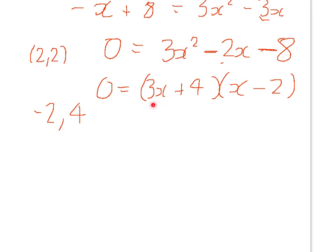What value makes this bracket equal to 0? Because when you're multiplying two brackets together, the only way you can get 0 is if one bracket equals 0. So we want 3x plus 4 equal to 0, so 3x equals minus 4, so x equals minus 4 over 3.